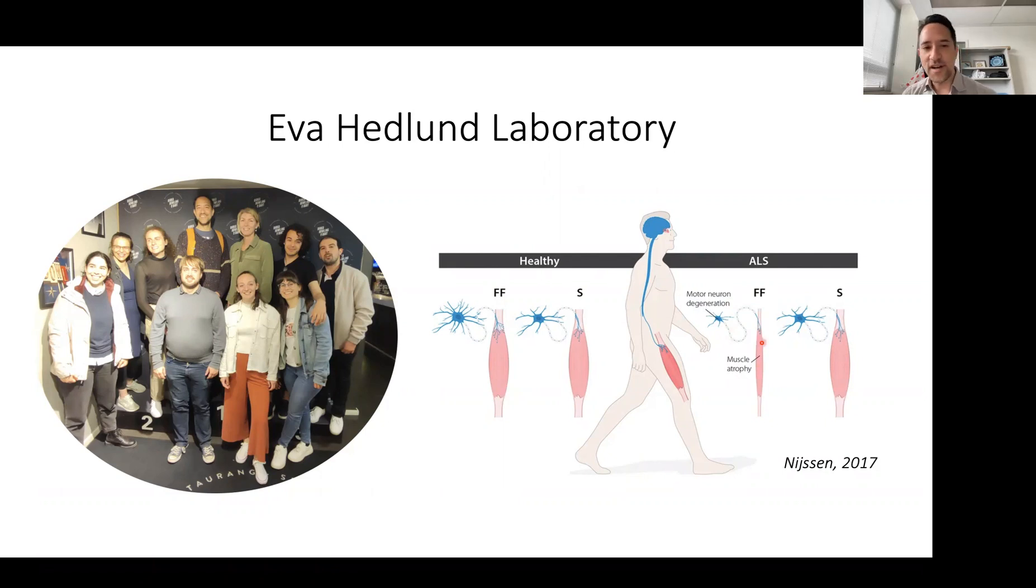When I first arrived in Eva's lab, we spoke a lot about how in vitro models of ALS could benefit a lot by patterning tissues to these more posterior axial levels, rather than at the time, a lot of protocols that would instead derive motor neurons from more anterior levels.